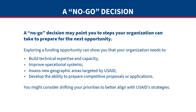A strategic no-go decision can help avoid an unwise use of resources and may point you to steps your organization can take to prepare for the next opportunity. Exploring a funding opportunity can show you that your organization needs to build technical expertise, improve operational systems such as reporting and accounting software, assess new geographic areas, or develop the ability to prepare competitive proposals. Some organizations consider shifting their priorities to better align with USAID's strategies, weighing the costs and potential benefits of making that shift.